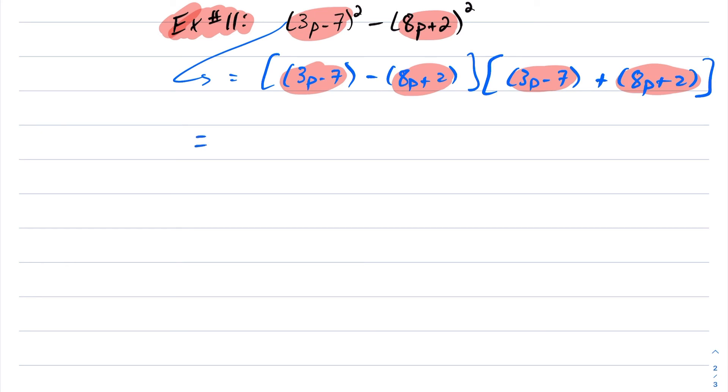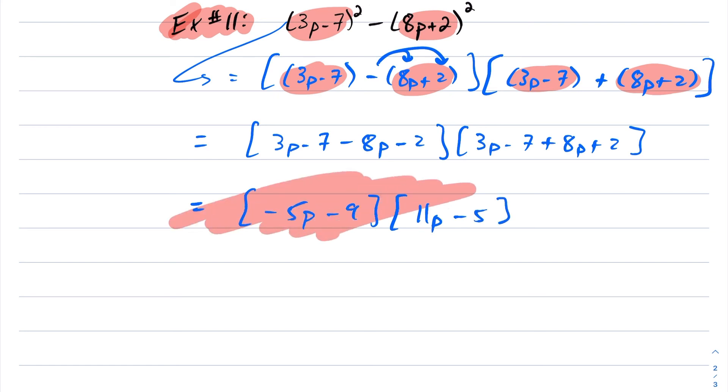So now you want to clean this up a bit if you can. So we should distribute that minus sign. And that's the importance of not forgetting those brackets, right? Because I put those brackets around here, this is going to be negative 8p minus 2. Whereas if you might have forgotten to distribute that minus sign and you would have left this as a positive 2. And now this becomes (3p - 7 + 8p + 2). I can just drop the brackets on this stuff here because there's only ones in front. Now collecting like terms, you're going to get (-5p - 9)(11p - 5). And now we have our answer for example 11.